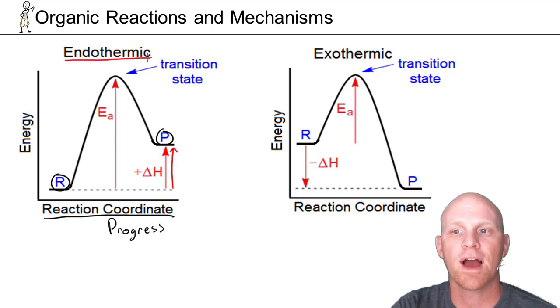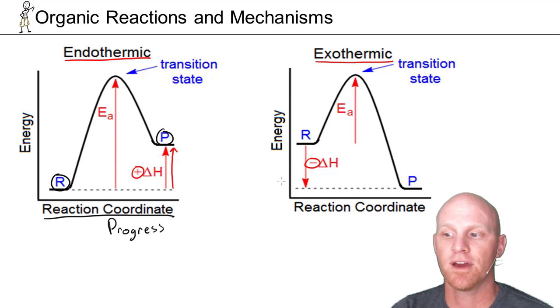For an endothermic reaction, these absorb heat and have a positive delta H. Whereas over here, an exothermic reaction, these release heat, so produce heat, and have a negative delta H value.